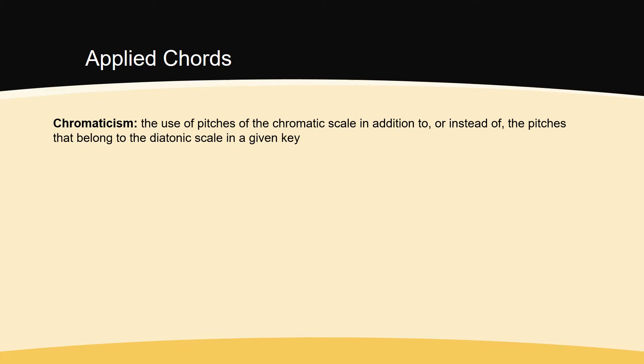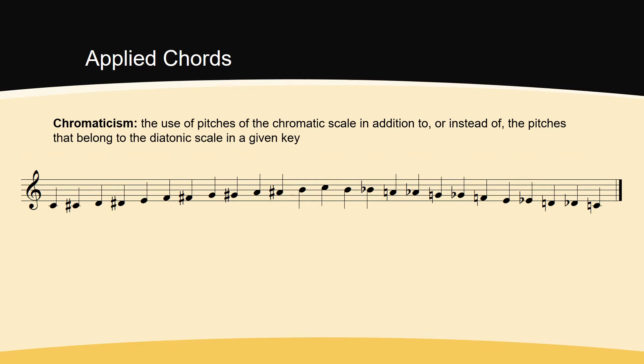The chromatic scale divides the octave into all twelve of its semitones. Here is what the chromatic scale sounds like. The root of the word chromatic comes from the Greek word chronos, which means color.